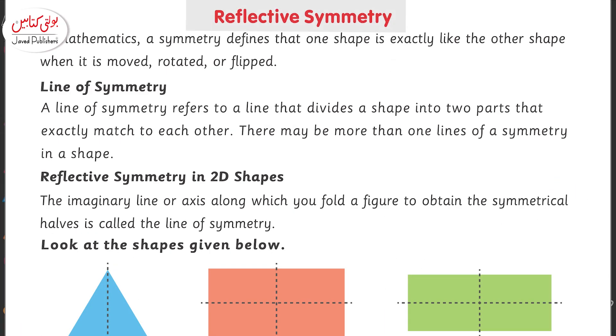Now let's look at page number 120 on reflective symmetry. In mathematics, a symmetry defines that one shape is exactly like the other shape when it is moved, rotated, or flipped.